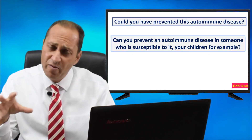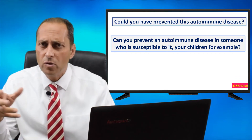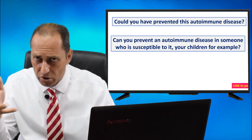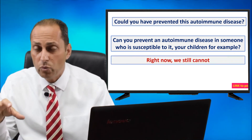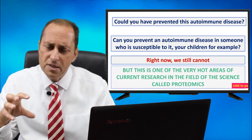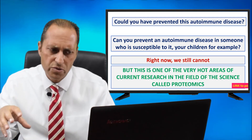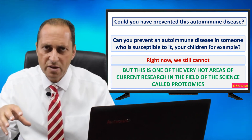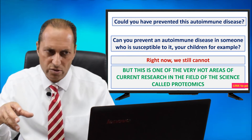Could you have prevented this autoimmune disease? Can you prevent an autoimmune disease in someone who is susceptible to it — your children, for example? Well, right now we still cannot. But this is one of the very hot areas of current research in the field of the science called proteomics. And maybe in the near future, we can give you a better answer to that question.